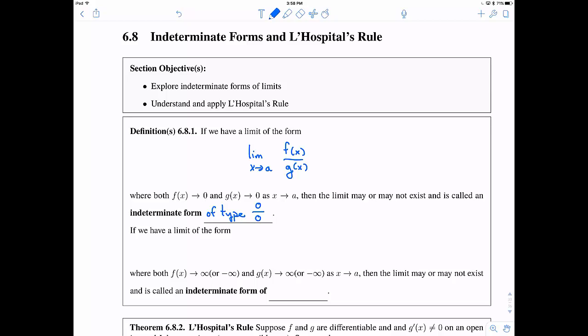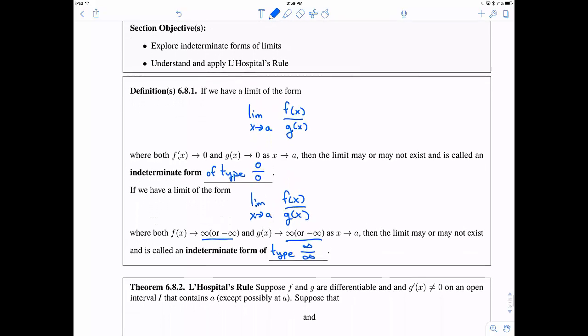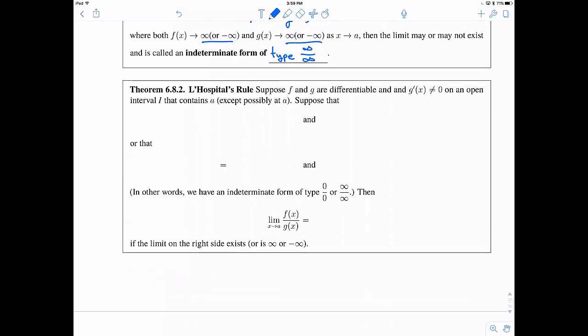Now another indeterminate form is one where we have the same sort of setup. We have the limit as x approaches a of f(x) over g(x), but now f(x) and g(x) are both approaching positive or negative infinity as x approaches a. Then again, the limit may or may not exist, and this is called an indeterminate form of type infinity over infinity. And again, this kind of makes sense because f and g are both heading towards infinity.